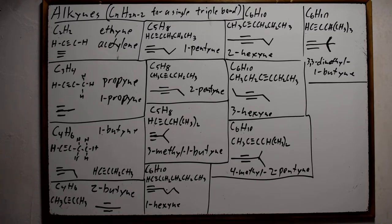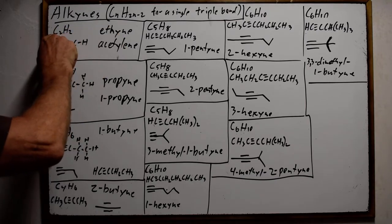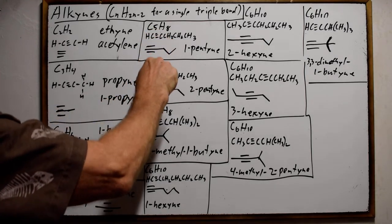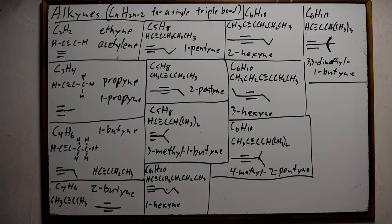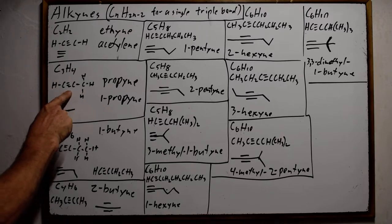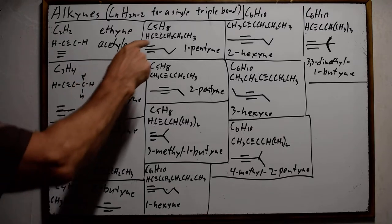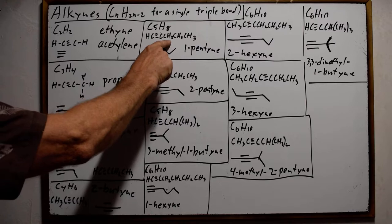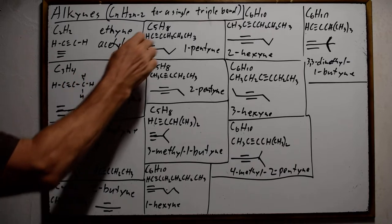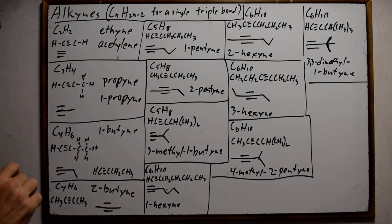These examples are showing the different ways of representing compounds. The molecular formula is not sufficient because it includes a lot of isomers. So we can have an expanded formula, a more condensed formula, or a skeletal formula. These three representations can show the individual isomers of the compounds.